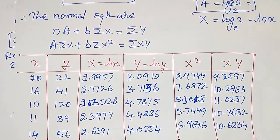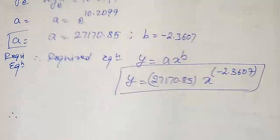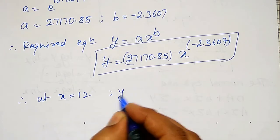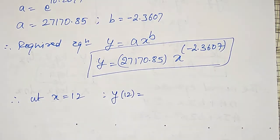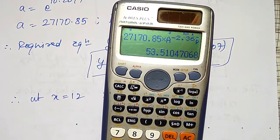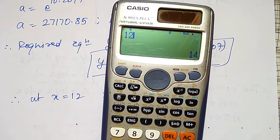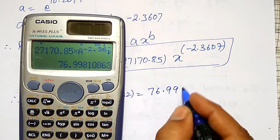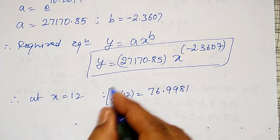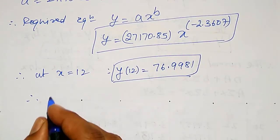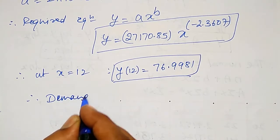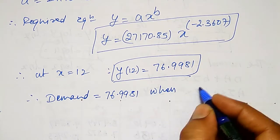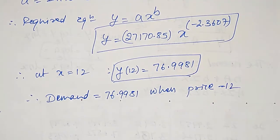Now I have to estimate the demand when price x = 12. Substituting a = 12 in the same expression: y(12) = 27170.85 × 12^(−2.3607) = 76.9981. Therefore, demand = 76.9981 when price = 12.